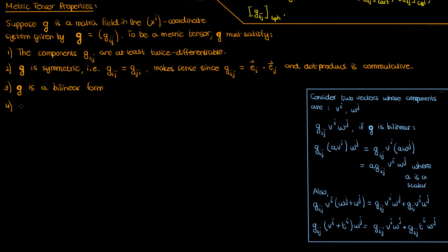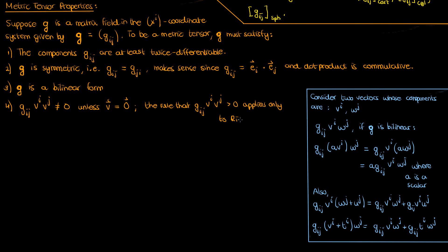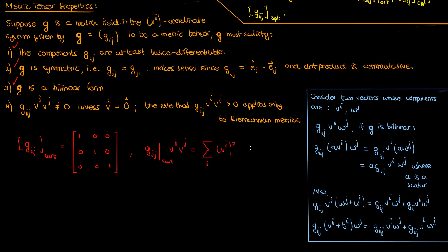The fourth property is that if I take the product g sub ij times v super i times v super j — the same vector v with both indices — this product cannot be zero unless the vector v is zero. Some books say this product can only be positive, but that generally applies only to Riemannian metric tensors. I'll be more general and allow non-Riemannian or pseudo-Riemannian metrics, which comes up with the Minkowski metric in special relativity. You can verify all four properties hold for the Cartesian metric tensor: its components are differentiable, it's symmetric, it's bilinear, and for the fourth property the final answer is just the sum over i of the squared components of v, which is always positive unless v is zero.